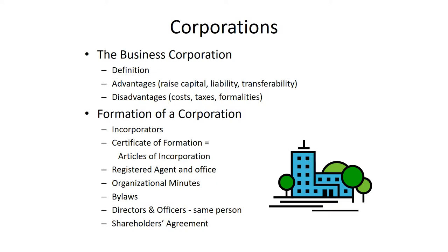A corporation also requires some additional formalities to be followed. Formation of a corporation is pretty straightforward — the incorporator is the person organizing the corporation. The document filed with the Secretary of State is a certificate of formation. In some states they're called articles of incorporation, and it used to be called that in Texas, but the terminology today is certificate of formation.